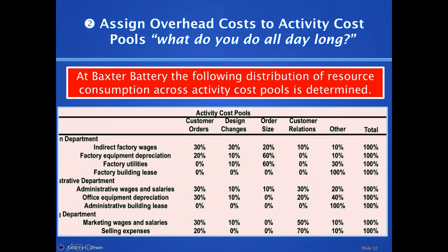For the first stage allocation, we go around to everyone and ask what they do all day. In the production department, we ask indirect factory wages — think of the supervisor — how much time they spend on each activity. They said: 30% on customer orders, 30% managing design changes, 10% on individual orders, 10% dealing with customers, and 10% on other activities — that's 100% of their day.